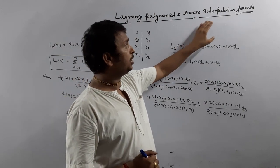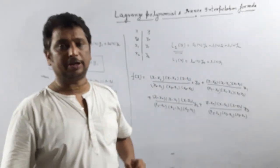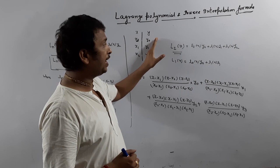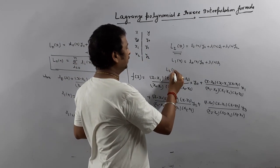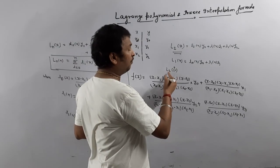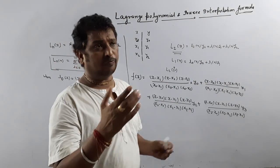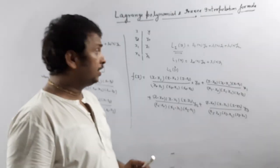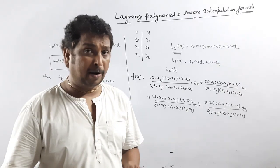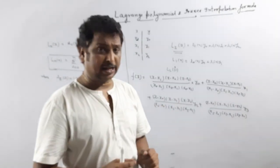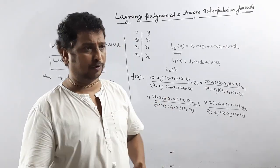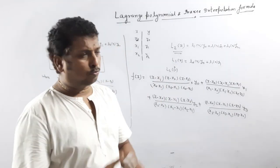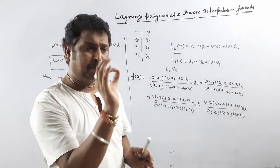Now, what is the inverse interpolation formula? Inverse interpolation is basically the reverse of what we do for Lagrangian polynomial. Here x is given and corresponding y is given, and they ask you to find the value of y for a corresponding x. For inverse, they will give the y value and ask you to find x. For Lagrangian interpolation formula, x is given and you find y. For inverse, y is given and you find x. So what changes do we have to make? Nothing — just in place of x, put y.